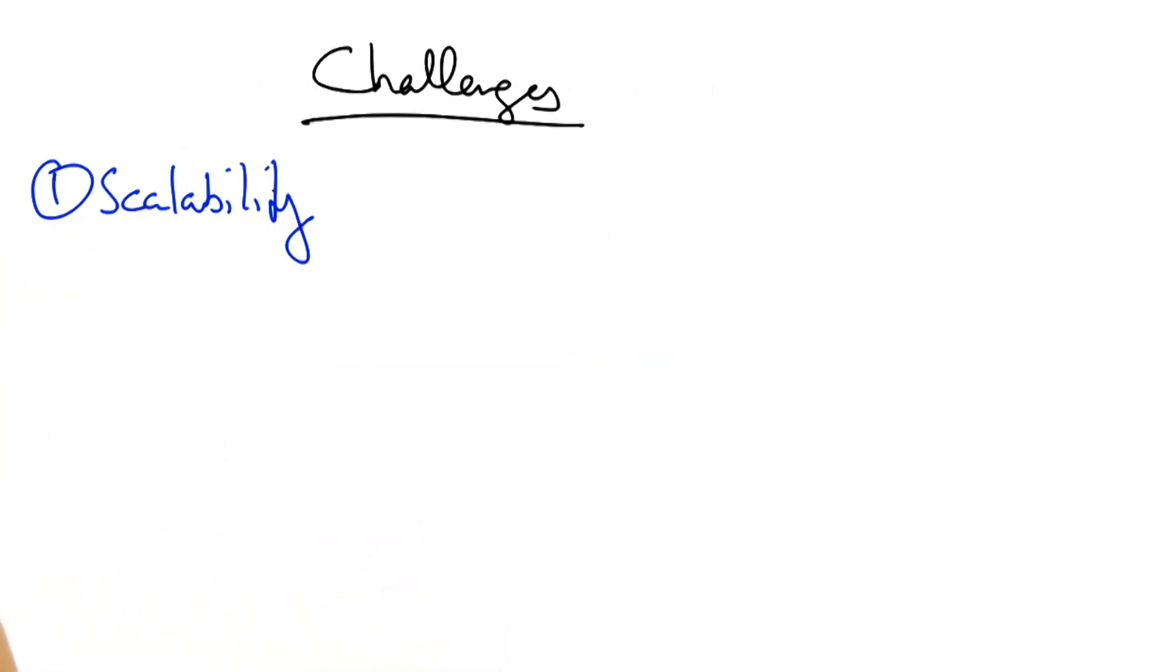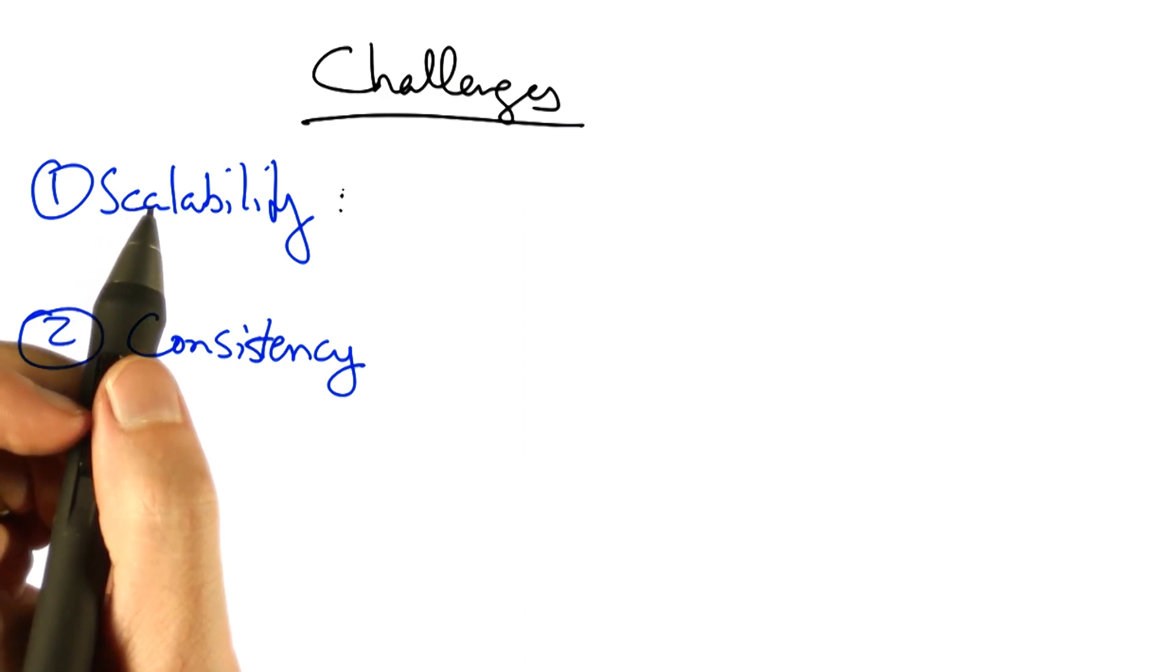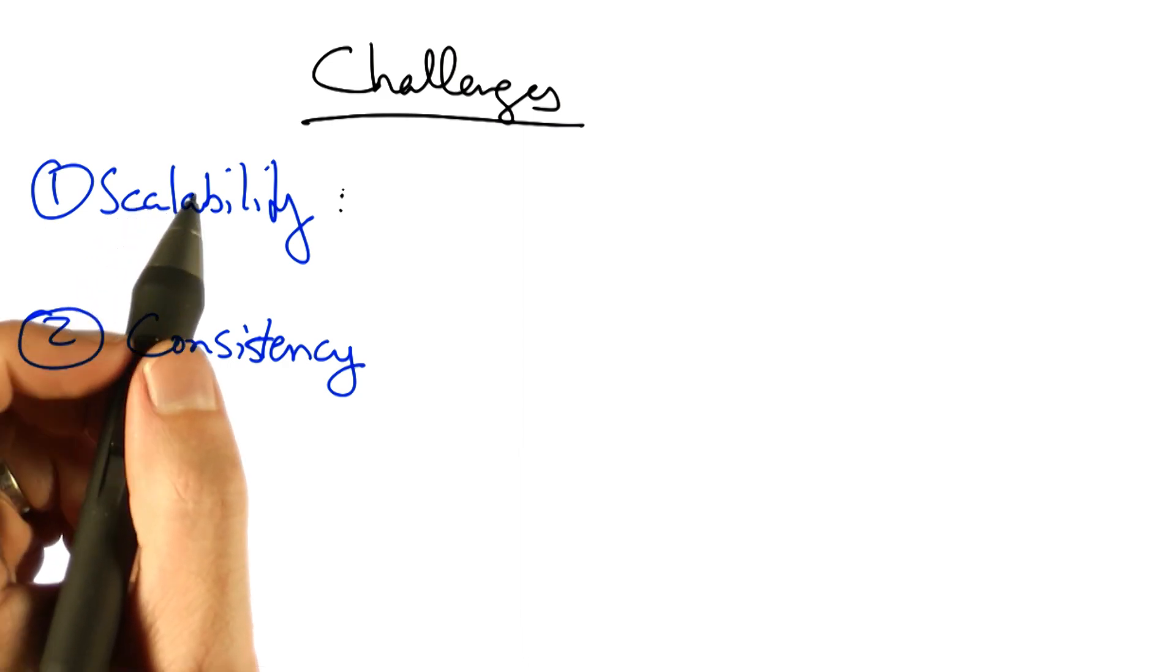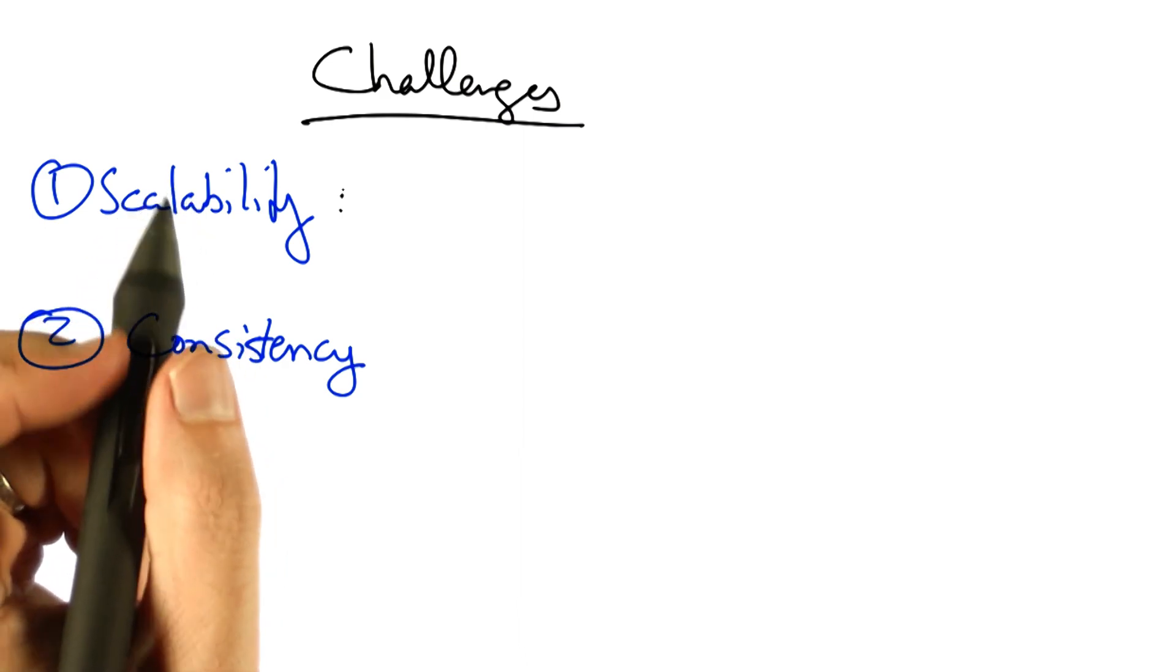Two fundamental challenges with SDN are scalability and consistency. In an SDN, a single control element might be responsible for many forwarding elements.